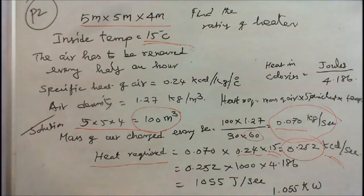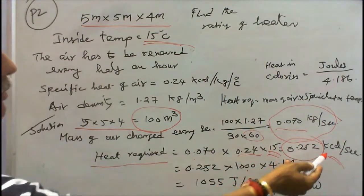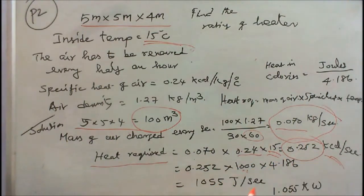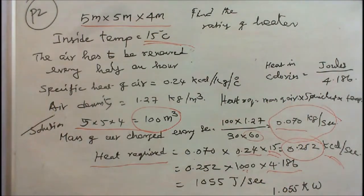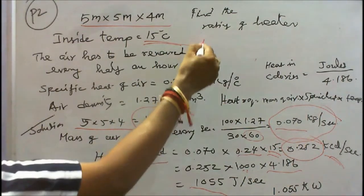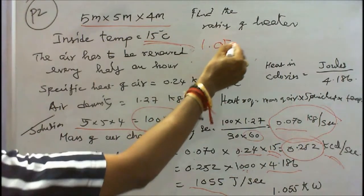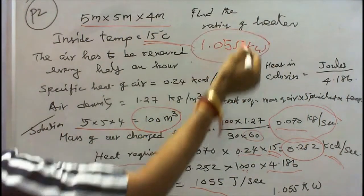Which is in kilocalories per second, we have to convert to joules. So conversion to joules is 0.252 into 1000 (because it is in kilos) into 4.186. I will get in joules. 1 watt equals 1 joule per second. Answer is 1055 joules per second, that equals 1.055 kilowatts. The rating of the heater is 1.055 kilowatts.